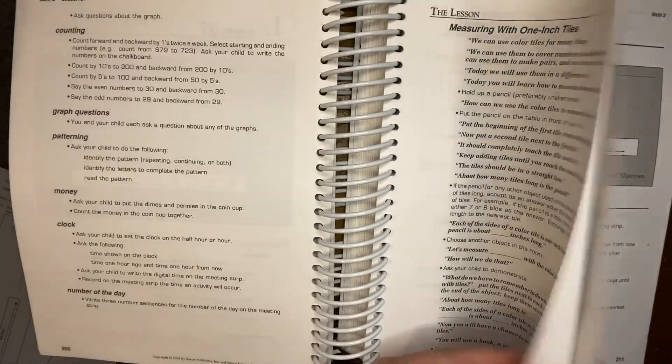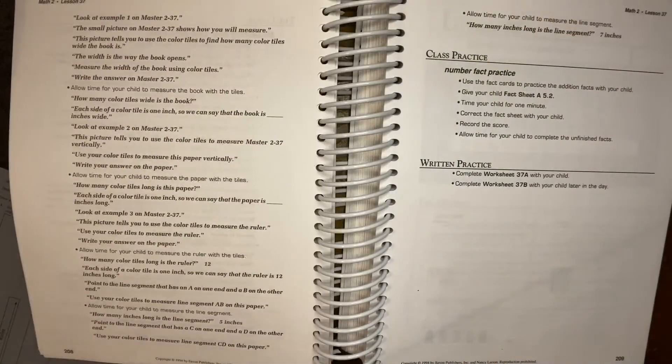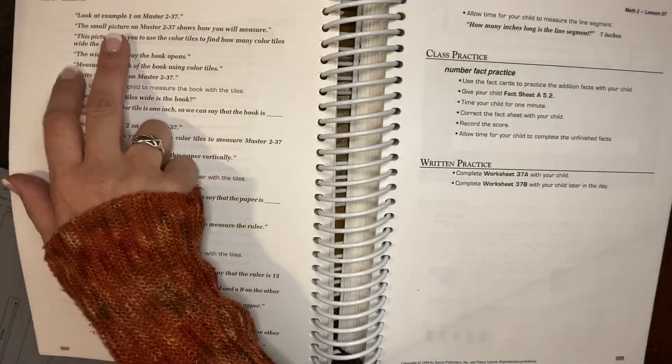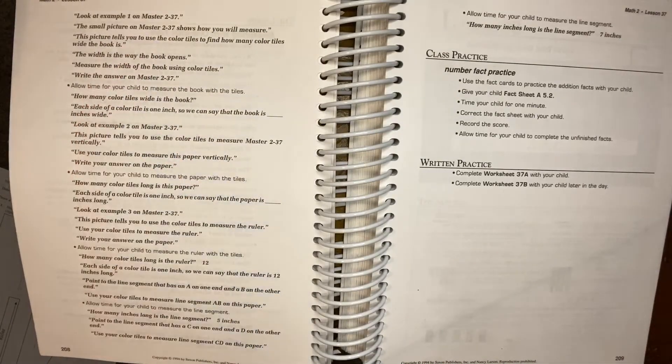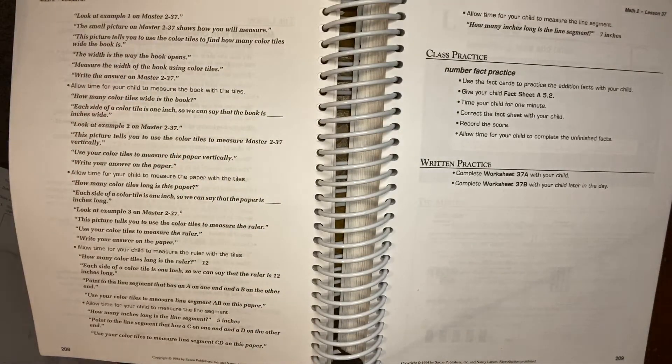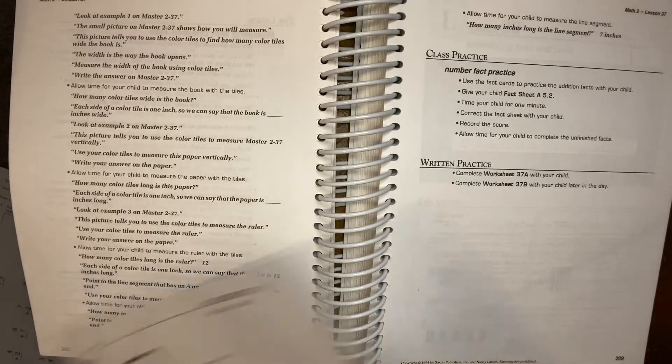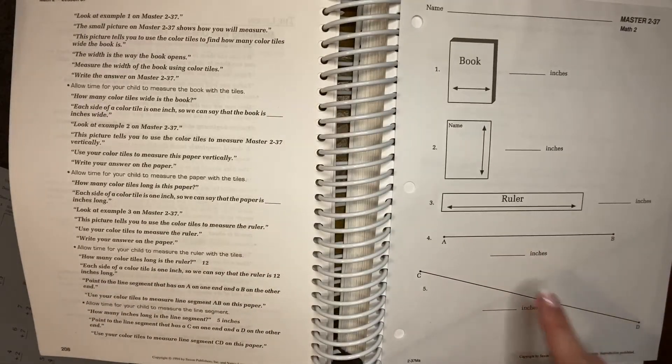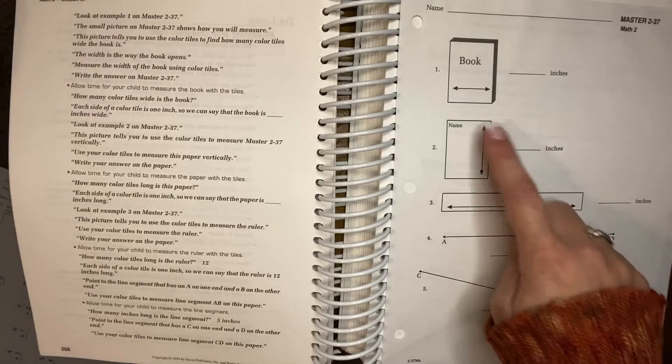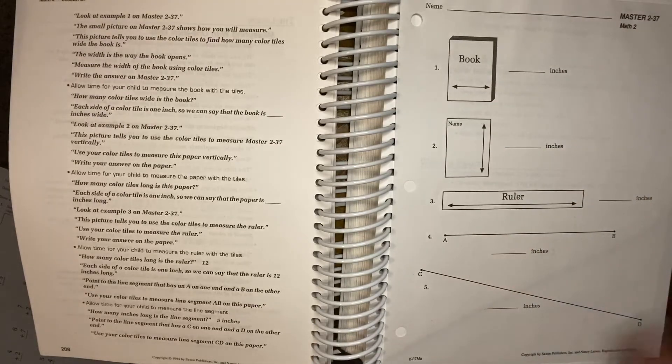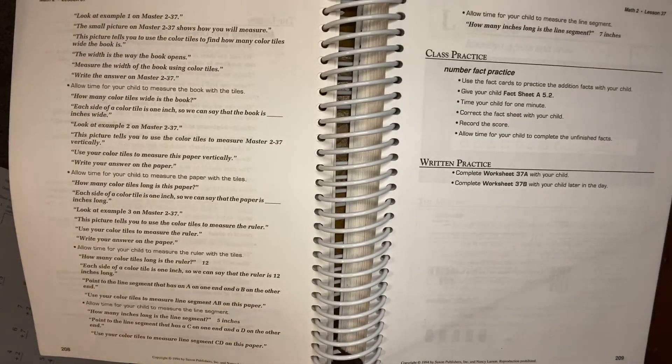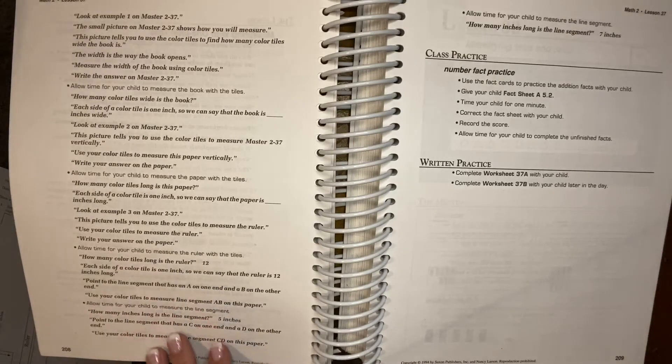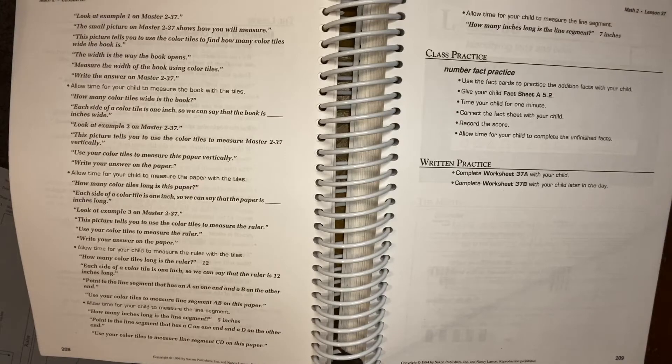So that is very hands on also, which is nice. And then it says like, look at an example on master 237. So with your worksheets, any master type things that you will need are in there too. So you will use the tiles to measure these things. And then you go on to using the ruler and you would continue on the lesson like that.